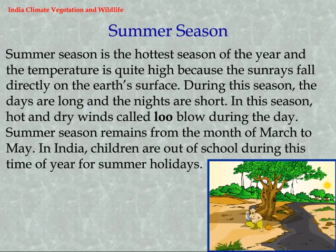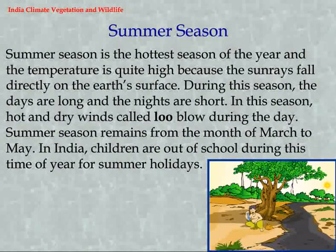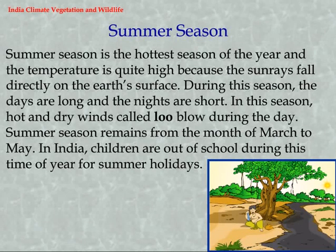Summer Season. Summer season is the hottest season of the year and the temperature is quite high because the sun rays fall directly on the Earth's surface. During this season, the days are long and the nights are short. Hot and dry winds called loo blow during the day. Summer season remains from the month of March to May. Children are out of school during this time for summer holidays.